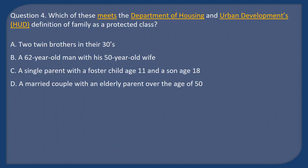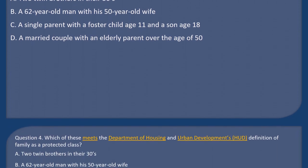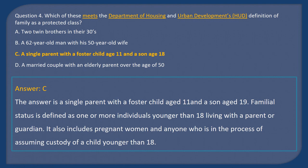Question 4: Which of the following meets HUD's definition of family as a protected class? A) Two twin brothers in their thirties, B) A 62-year-old man with his 50-year-old wife, C) A single parent with a foster child age 11 and a son age 18, D) A married couple with an elderly parent over 50. Answer: C. Familial status is defined as one or more individuals younger than 18 living with a parent or guardian, and also includes pregnant women and anyone assuming custody of a child under 18.